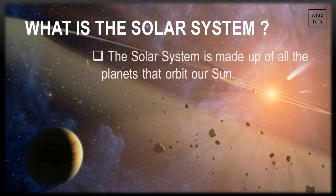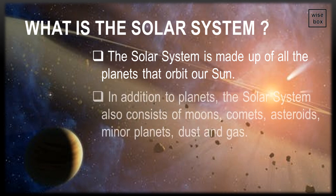The Solar System is made up of all the planets that orbit our Sun. In addition to planets, the Solar System also consists of moons, comets, asteroids, minor planets, dust and gas.